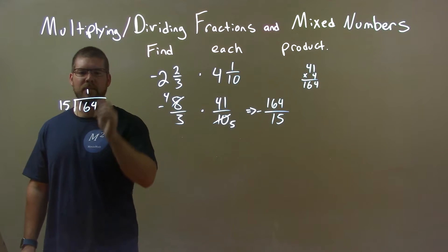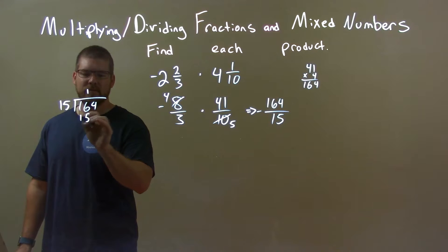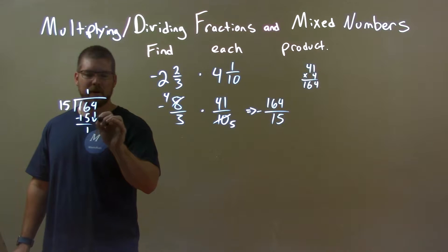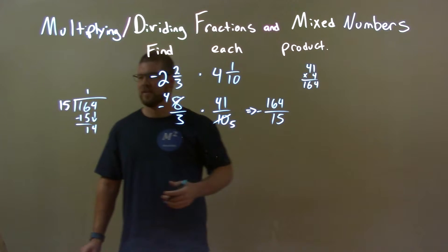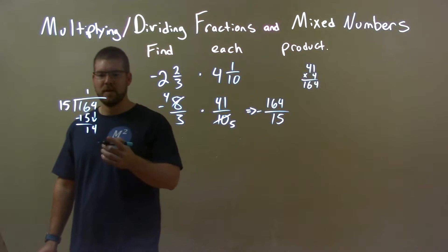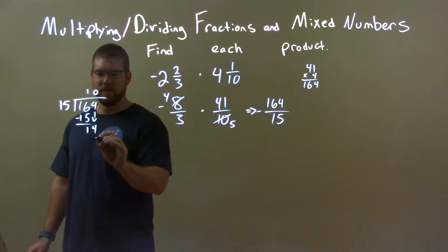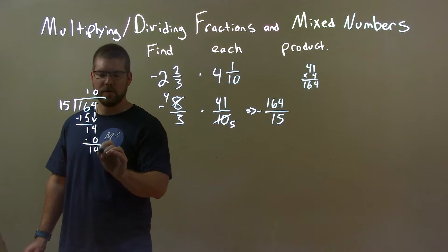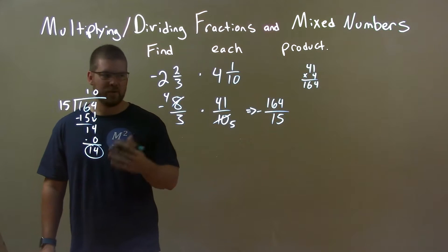15 goes into 16 one time. 1 times 15 is 15. Subtract them: 1. Bring down the 4. Well, 15 does not go into 14. So if it's 0, 0 times 15 is 0. Subtract them, we have 14. Here's our remainder.